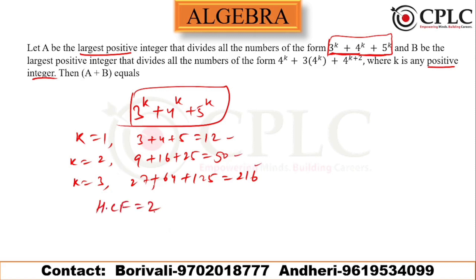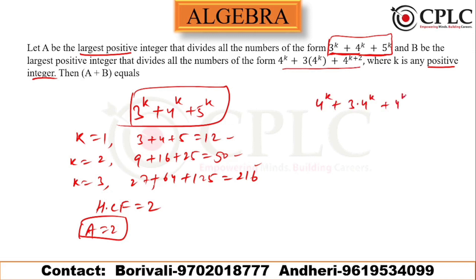Since 2 is the only number that divides all such values, A = 2. Now similarly, we find B. The expression 4^k + 3·4^k + 4^(k+2) — taking 4^k common — leaves 1 + 3 + 16, which equals 20. So the expression becomes 20·4^k.